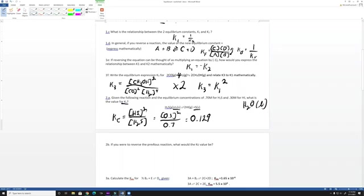Moving on to 2B. If you were to reverse the previous reaction, what would the Kc value be? If we're reversing, we'll call this Kc2. The new reaction, meaning reversing it, means we're taking it to the negative one power or we're flipping it. So it would be equal to one over 0.129, and this is going to equal 8.20.